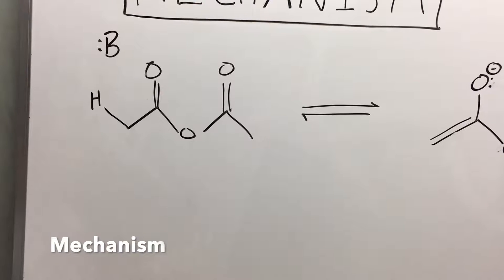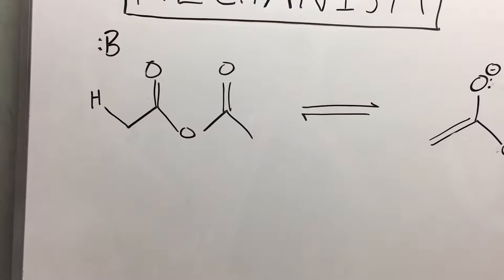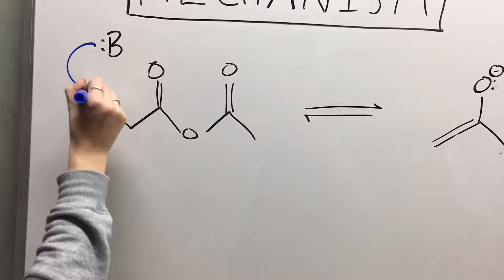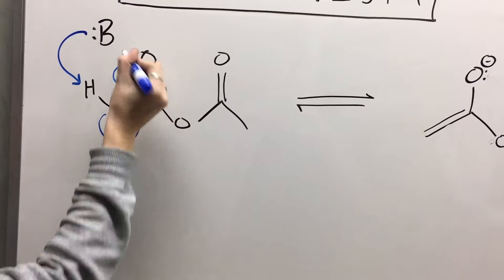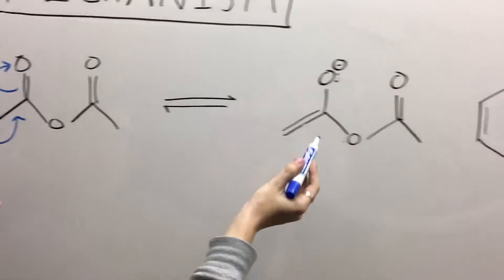So for the mechanism for the Perkin reaction, in the first step, the base deprotonates this hydrogen, swinging down these electrons up onto this oxygen. This forms an enolate ion,